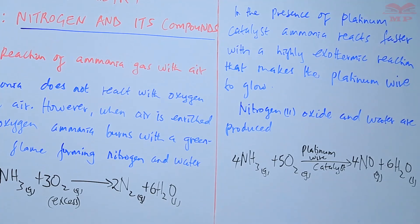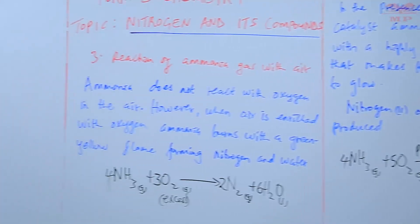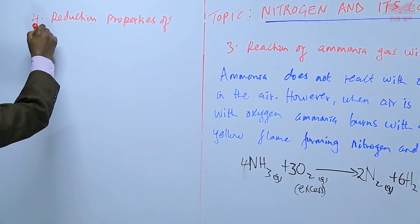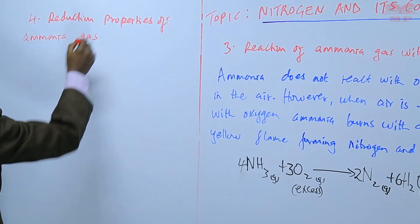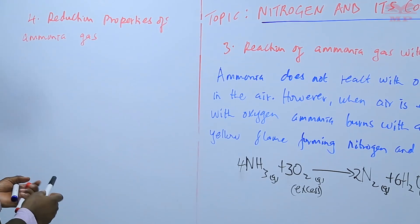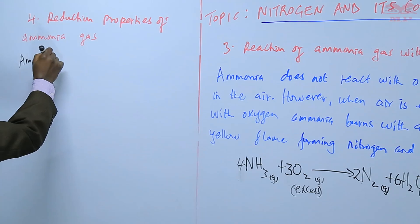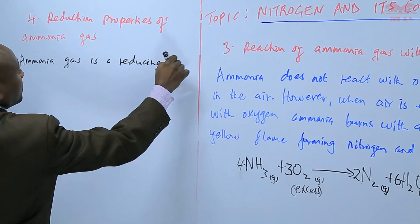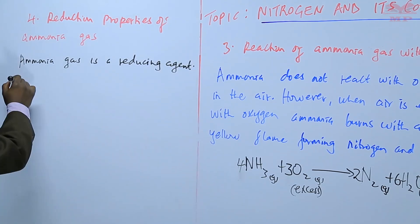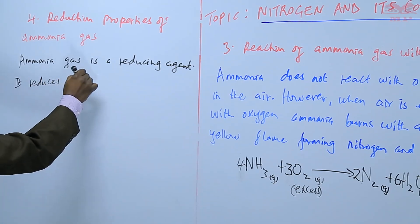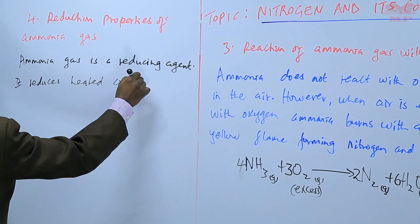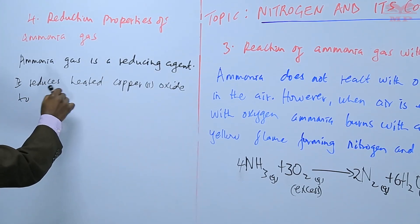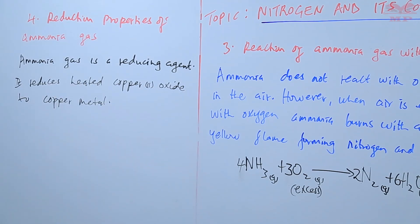Chemical property number four is the reduction properties of ammonia gas. Ammonia gas is a reducing agent because it reduces heated copper(II) oxide to copper metal, as can be seen in this equation.